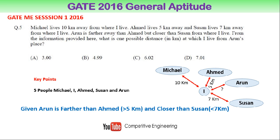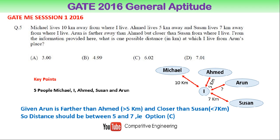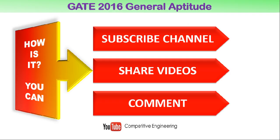Among the given options, the only value that falls between 5 km and 7 km is 6.02, which is option C. So this is the answer to the question. This is a simple question and you can answer it by representing it diagrammatically. Thank you for watching.